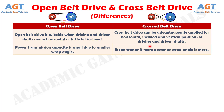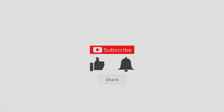And difference number 8: in open belt drive, power transmission capacity is small due to the smaller wrap angle, whereas cross belt drive can transmit more power as the wrap angle is more.